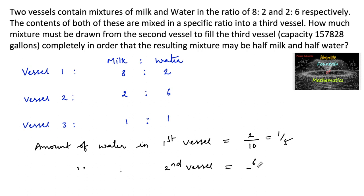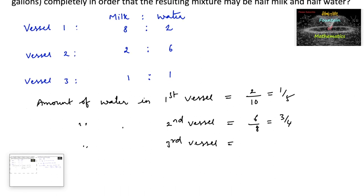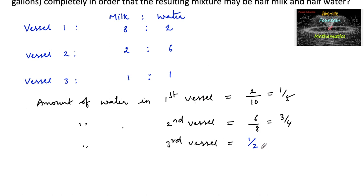The amount of water in the second vessel is 6 out of 8, that is 3/4. And in the third vessel, the amount of water is 1/2, since the ratio is 1:1. So: amount of water in first vessel is 1/5, in second vessel is 3/4, and in the third vessel is 1/2.